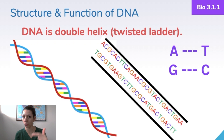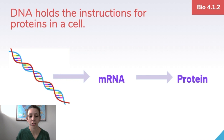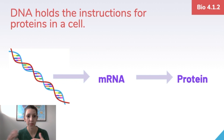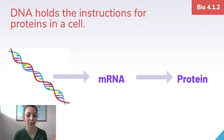DNA holds the instructions for proteins in a cell. Remember the central dogma: we go from DNA to RNA to protein. The sequence of nucleotides in DNA has the code to make specific proteins by giving instructions for which amino acids come where in the protein. The A's, T's, G's, C's, and U's found in nucleic acids are the same across all organisms, so DNA really is this universal genetic code.